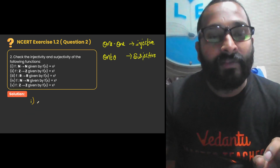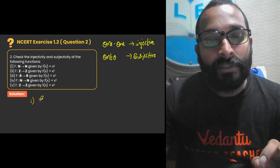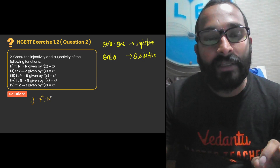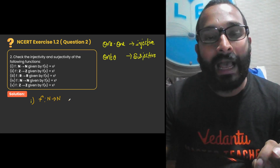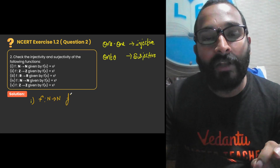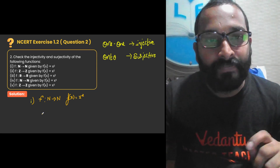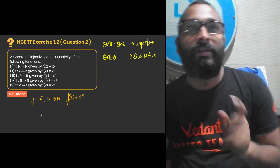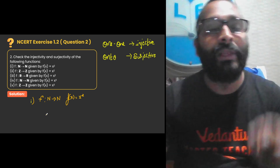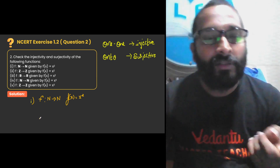For the first sub-question, the domain and co-domain is the set of natural numbers N, and the function f(x) is defined as x² (x to the power of 2). Observe: if you take any natural number and square it, you get a unique value in the co-domain. For example, 1² = 1, 2² = 4, 3² = 9, and so on.